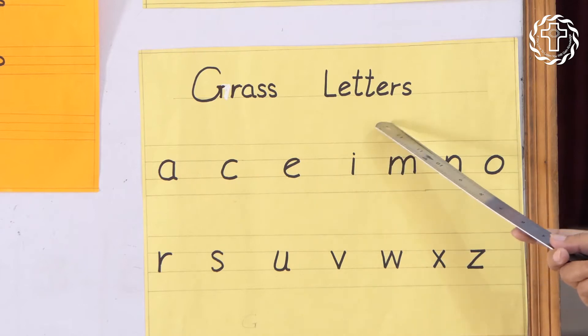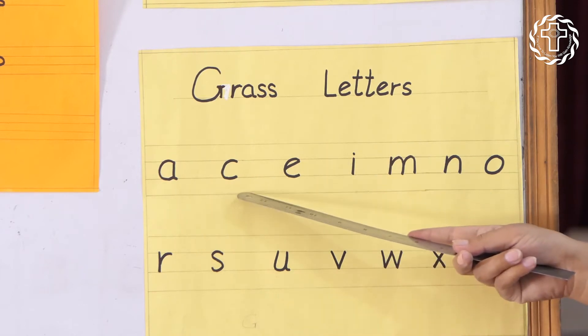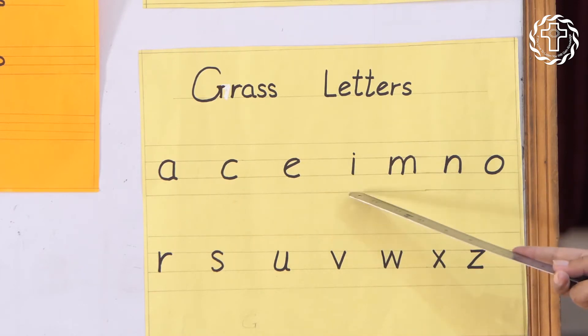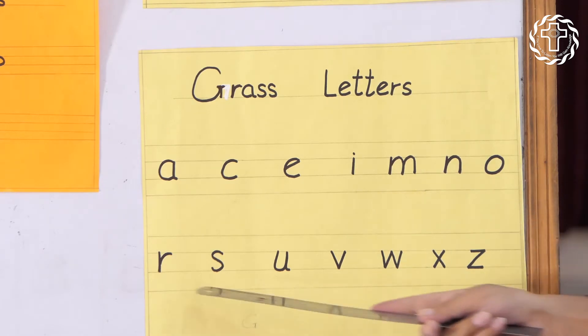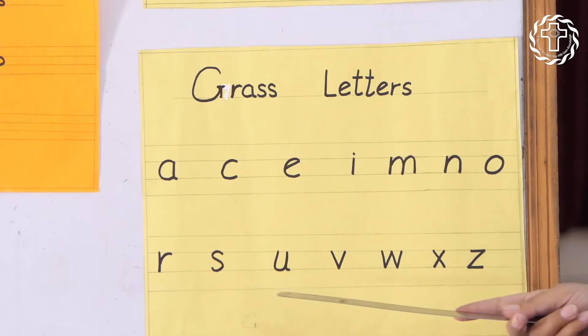Grass letters: A, C, E, I, M, N, O, R, S, U, V, W, X, Z.